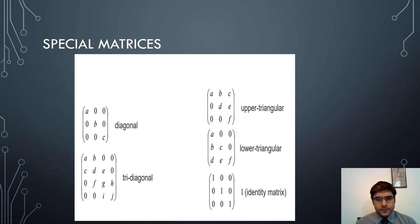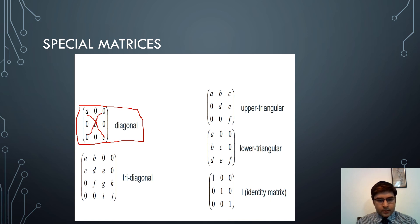Now I shall demonstrate a few special matrices that have some specific properties. First is the diagonal matrix. The diagonal refers to the main diagonal, and the other diagonal is termed the anti-diagonal. If all the diagonal elements are non-zero and all other elements are zero, it is termed a diagonal matrix.